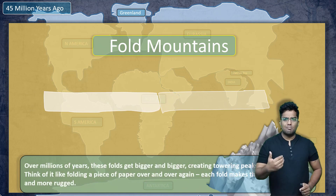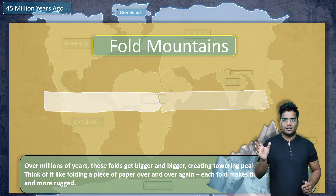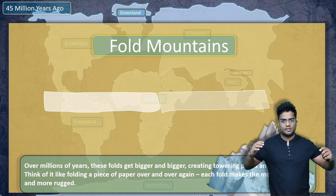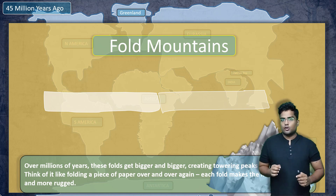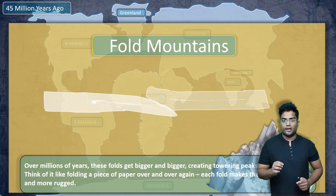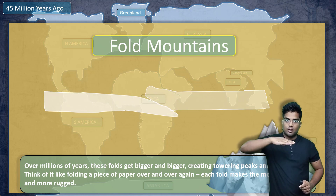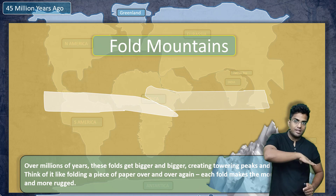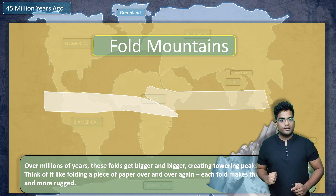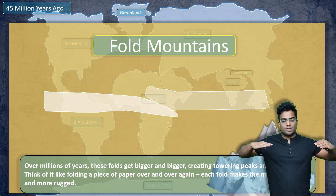It's a million, million years of process that these tectonic plates come together. And once they come together, they collide. And when they collide, the denser one goes down deep inside the lighter tectonic plate.